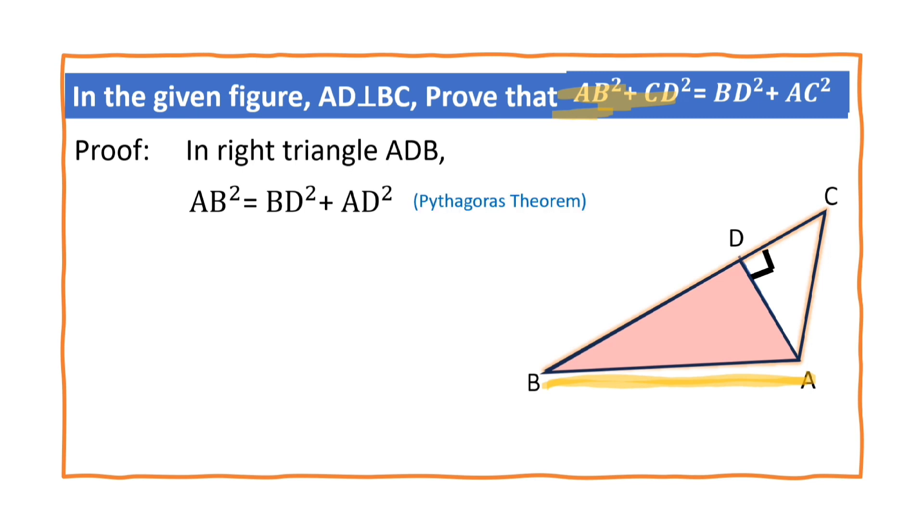And we also want CD, CD². Where is CD? This is CD. This belongs to the right angle triangle. Which one? ADC. So, in right angle triangle ADC,